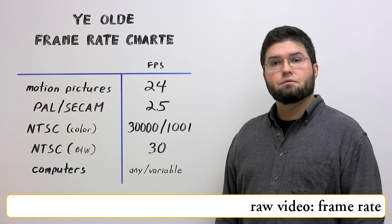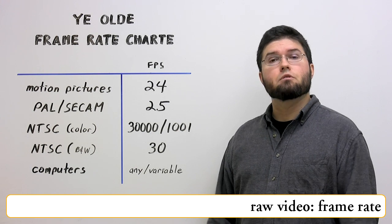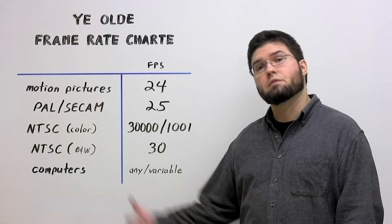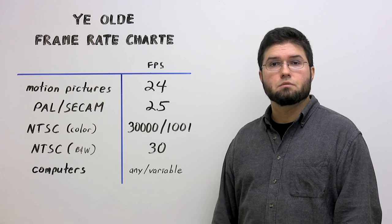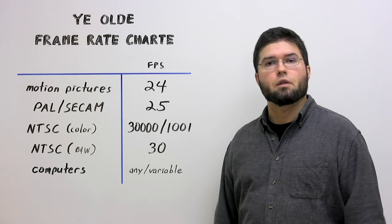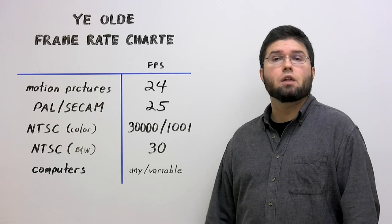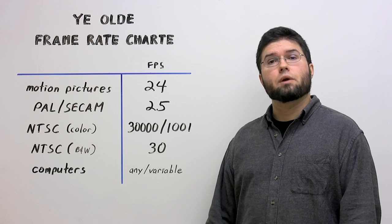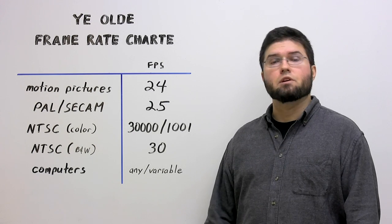The second obvious video parameter is the frame rate, the number of full frames per second. Several standard frame rates are in active use. Digital video, in one form or another, can use all of them, or any other frame rate, or even variable rates where the frame rate changes adaptively over the course of the video. The higher the frame rate, the smoother the motion, and that brings us, unfortunately, to interlacing.